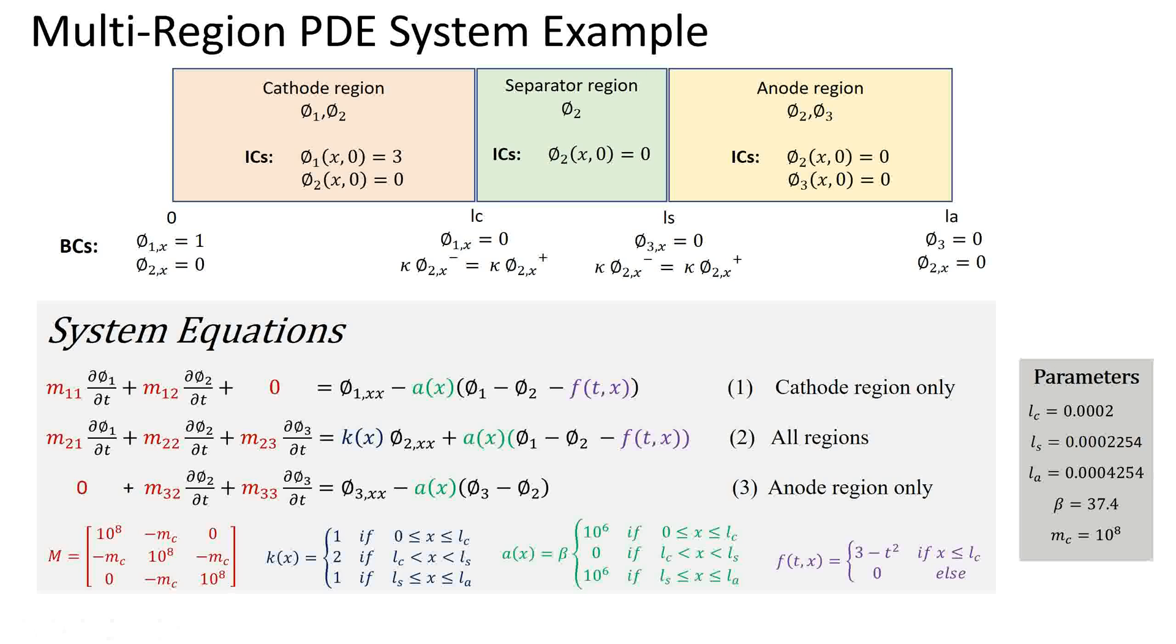Because each of the three equations is second order, depending on phi1xx, phi2xx and phi3xx, we need two boundary conditions for each equation. The boundary conditions and the initial conditions are all shown in the figure.